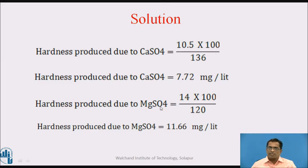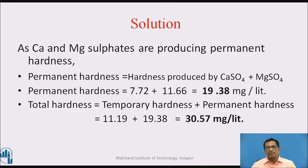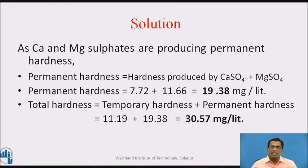Hardness due to magnesium sulphate: 14 × 100 ÷ 120 = 11.66 mg/L. As calcium and magnesium sulphates produce permanent hardness, permanent hardness = 7.72 + 11.66 = 19.38 mg/L. Total hardness = temporary + permanent = 11.99 + 19.38 = 30.57 mg/L.